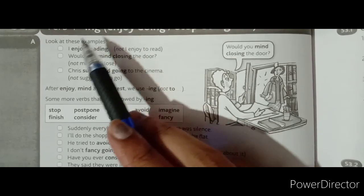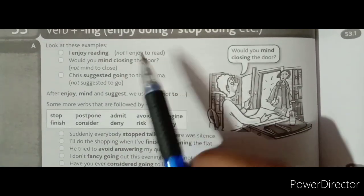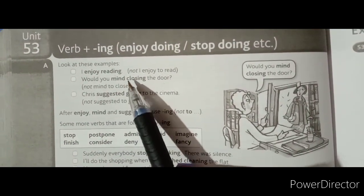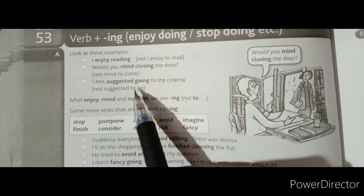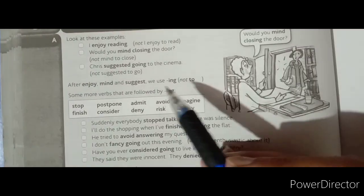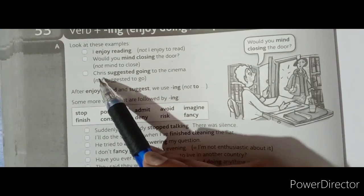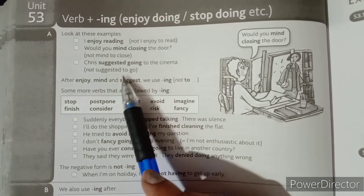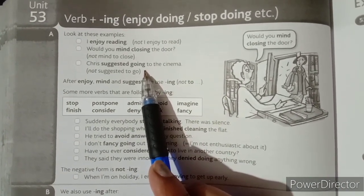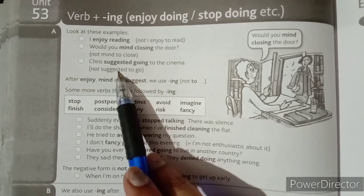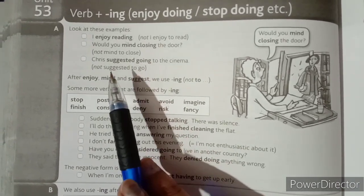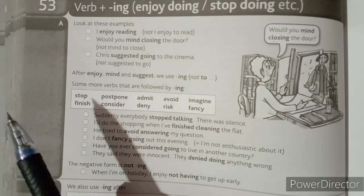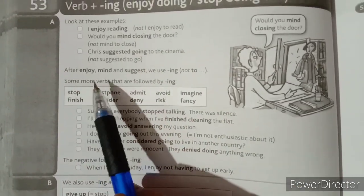You must write 'I enjoy reading', NOT 'I enjoy to read' or 'I enjoy to dance'. Writing 'to' here is wrong. Next: 'Would you mind closing the door?' — you must NOT write 'Would you mind to close the door.' And 'Chris suggested going to the cinema' — NOT 'suggested to going'. Also, no preposition is needed; do not add 'to' before the -ing verb.